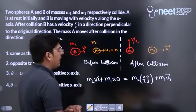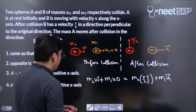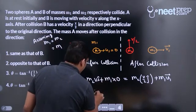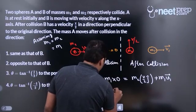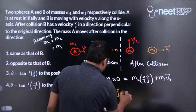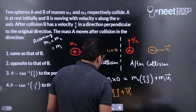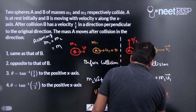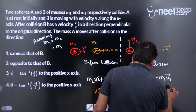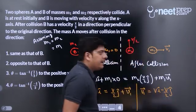So m2 and m1 are same. Then this is v i cap, this is again v by 2 j cap, this is velocity vector v1. So we get the velocity vector v1 as v i cap minus v by 2 j cap.